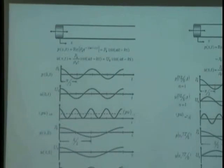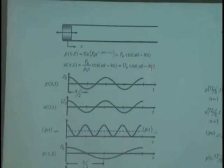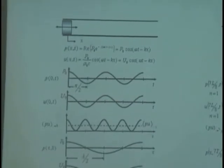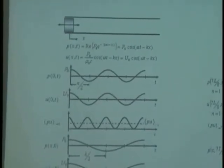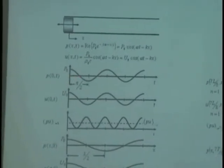That is P0 omega T. And the velocity at X equal zero would be cosine omega T. Therefore, driving point impedance is always rho zero C.